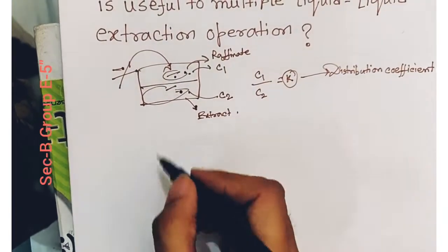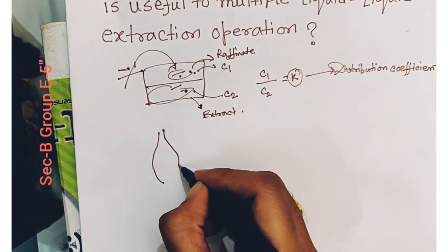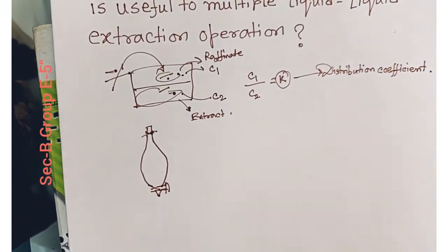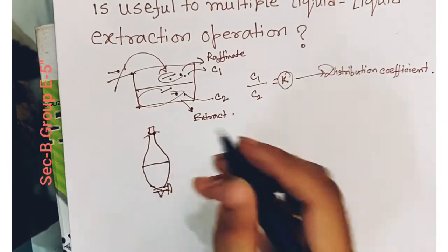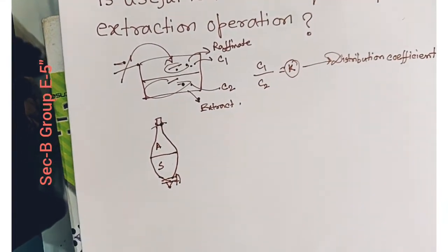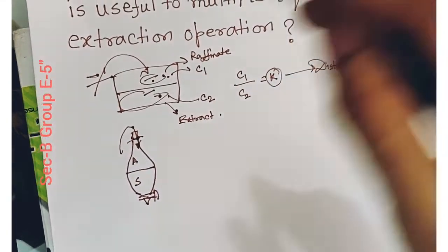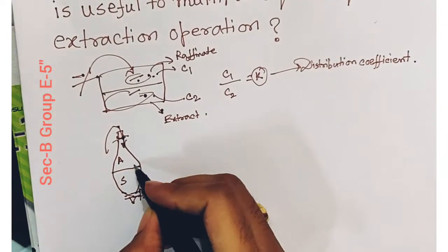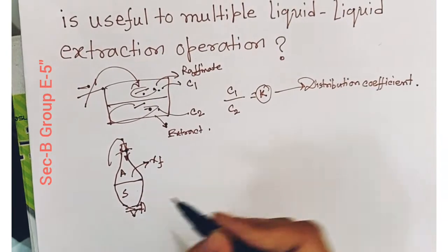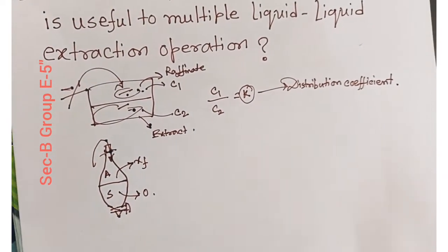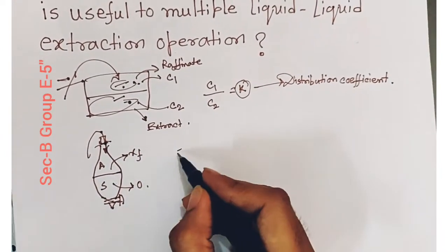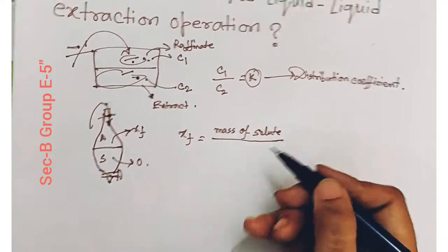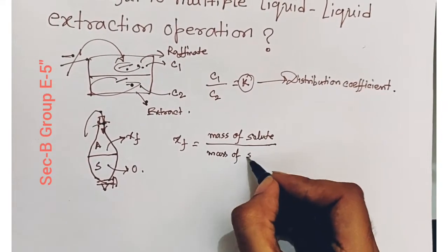Now let us consider a separating funnel containing two immiscible liquids having their mass respectively A and S. We add some feed to that immiscible liquid mixture. The concentration of that feed in the raffinate portion just after adding is XF, and in the extract portion it is 0 just after addition. So the initial concentration in the raffinate is XF.